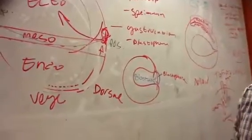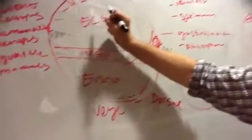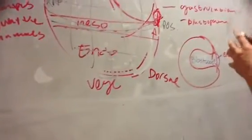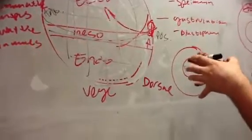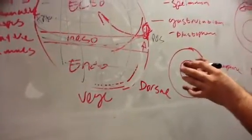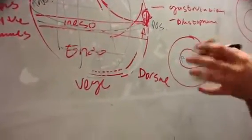After it divides a whole bunch of times there's a bunch of liquid in the center and it's like a cavity. What happens is if you imagine you have this ball and you push in on one side of the ball, that's what gastrulation is.